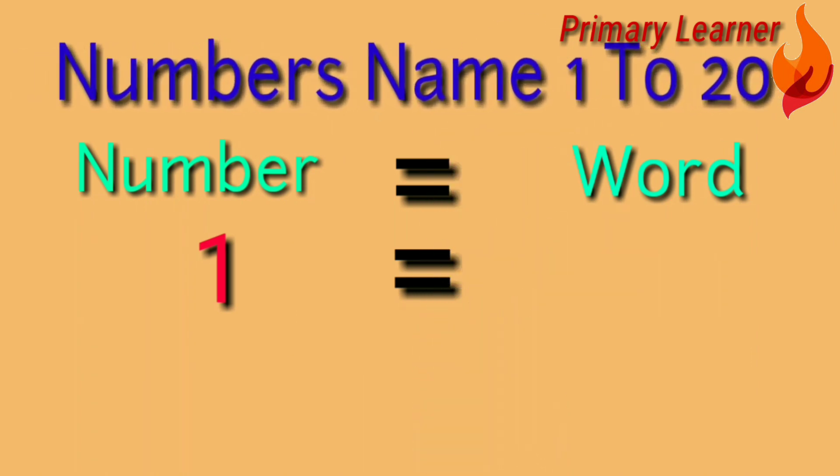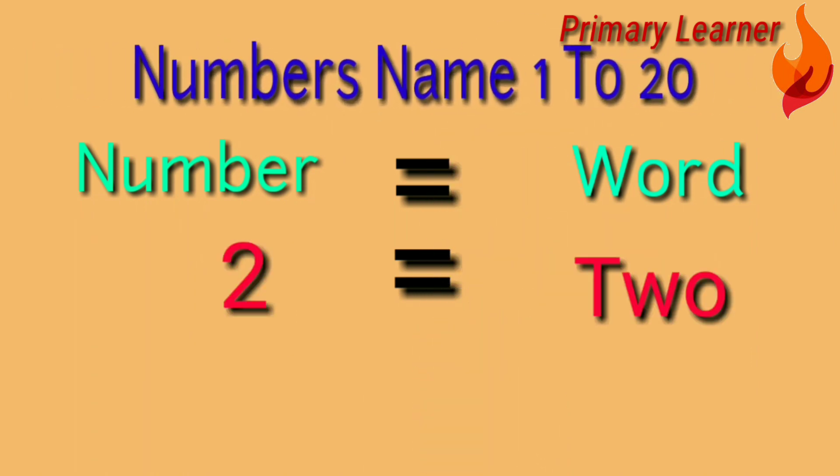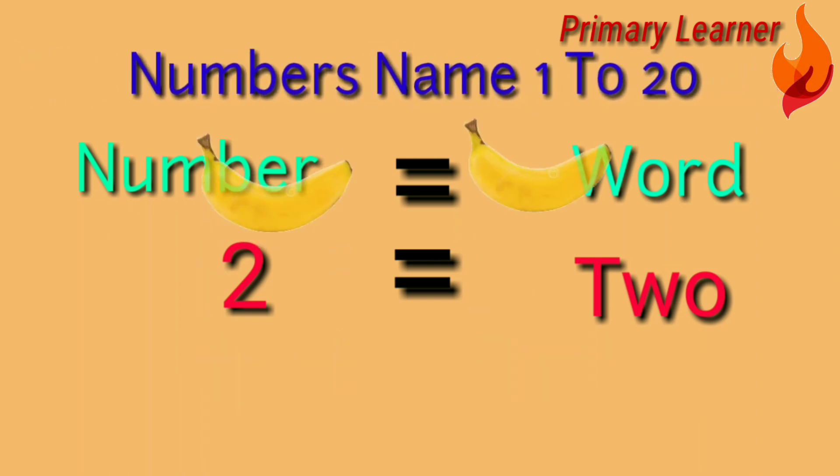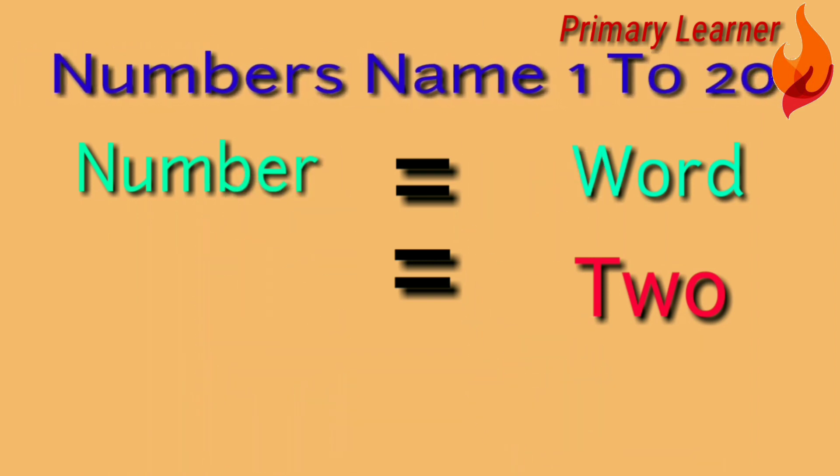2 - T-W-O, 2 bananas. 3 - T-H-R-E-E, 3 balls.